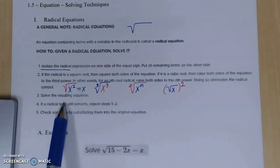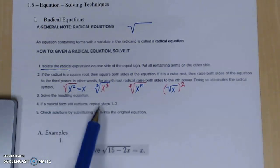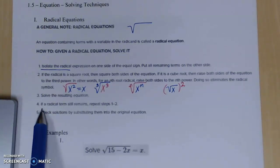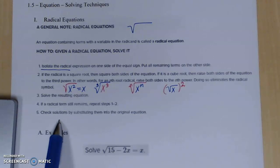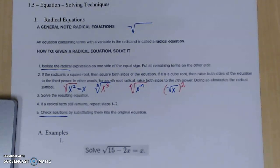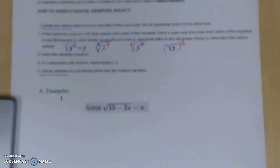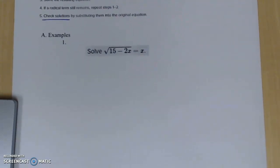So number three says solve the resulting equation. So once I'm able to eliminate that radical, I can now solve it. If a radical term still remains, go back into steps one and two. And then lastly, check the solutions by substituting them into the original equation. I cannot emphasize enough to check the solutions. I have not been checking most of my solutions as we work through these answers. But when working with radicals, you must check your solutions because most times you're going to get two answers, but only one of them is feasible.